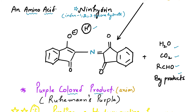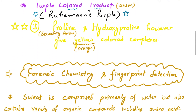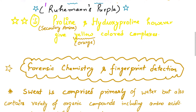This product is basically a purple-colored compound, or we can say a purple-colored anion. This is known as Ruhemann's purple — this is very important for entrance exams. Please note that proline and hydroxyproline, which are secondary amines, give yellow or orange color complexes with ninhydrin. So these two are exceptions to the purple-colored compound.